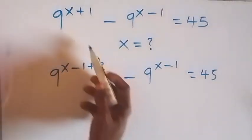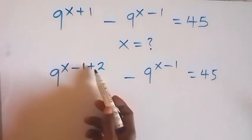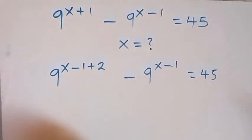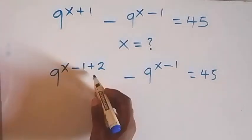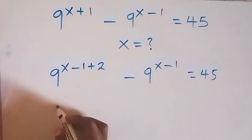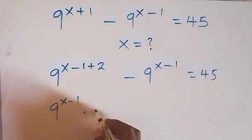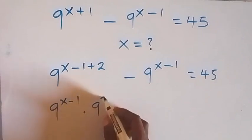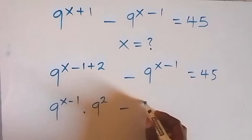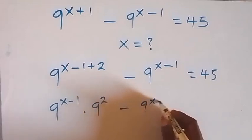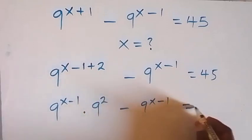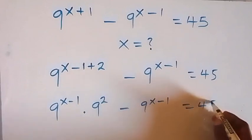And here, what we have is still the same thing as x plus 1 up here. And from the law of indices, here we can separate this. And this will be 9 raised to power x minus 1, then times 9 raised to power 2 minus 9 raised to power x minus 1 equals to 45 from here.